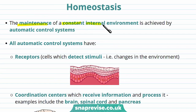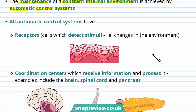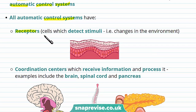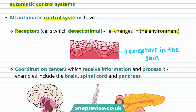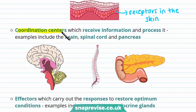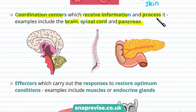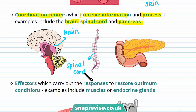The maintenance of a constant internal environment, or homeostasis, is achieved by an automatic control system. All automatic control systems have receptors — these are cells which detect stimuli or changes in the environment, for example receptors in the skin. They also need coordination centres, which receive information and process it. Examples include the brain, spinal cord, and pancreas. The brain and spinal cord make up the central nervous system. The pancreas is an endocrine gland that releases hormones.